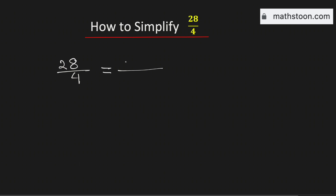We will write 28 as 4 times 7, and the number 4 as 1 times 4. Now we will cancel the common number which is 4. Therefore, it is equal to 7 over 1, which is equal to 7.